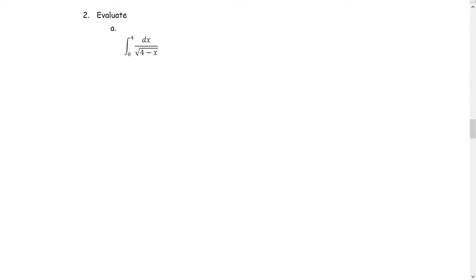Let's look at the example of improper integrals Type 2, where a point on the interval of integration makes the function not continuous. For part a, the integral from 0 to 4 of f of x with respect to x, where f of x is 1 over the square root of 4 minus x, which is not continuous at x equals 4, which is the upper limit.